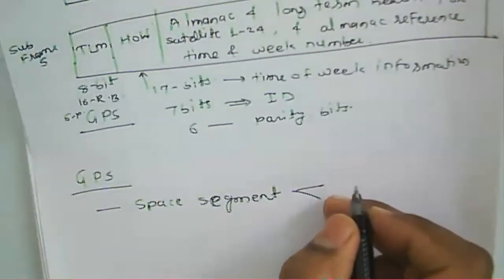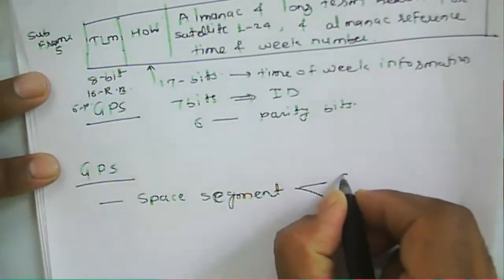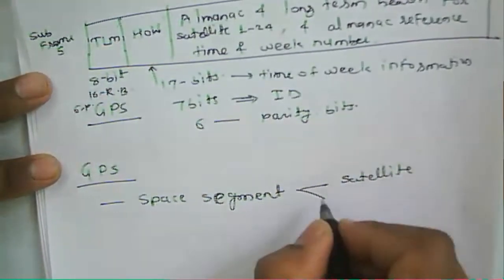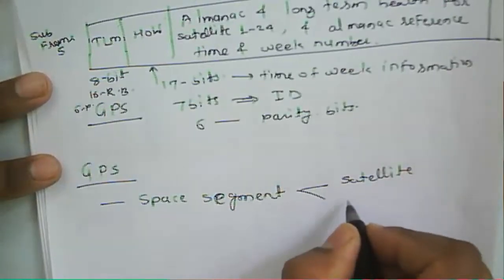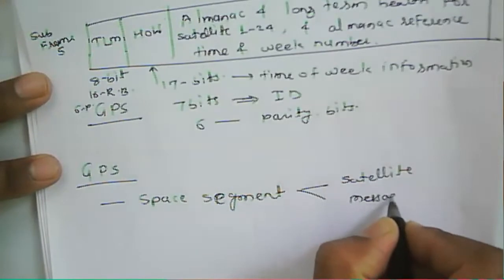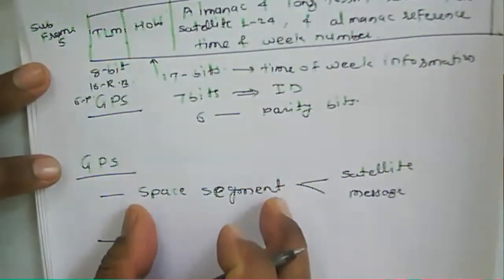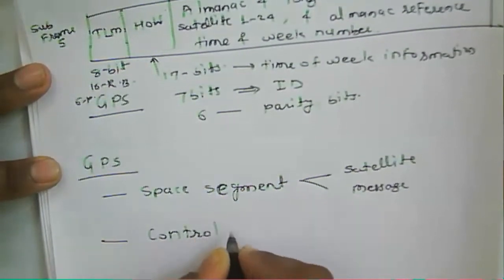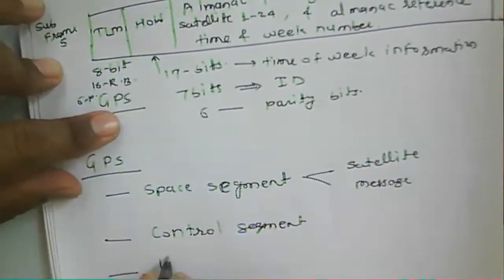In the space segment, it has information regarding the satellite constellation — the number of satellites. Each satellite sends its information as a message. GPS consists of a space segment, then a control segment, then a user segment.